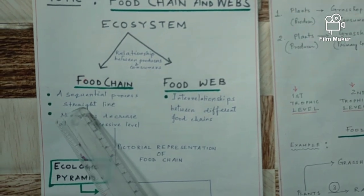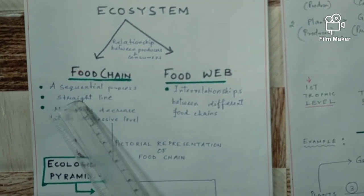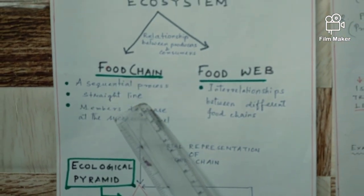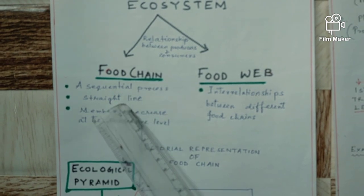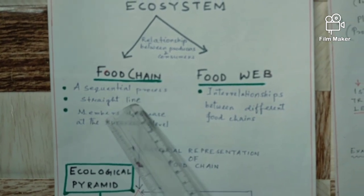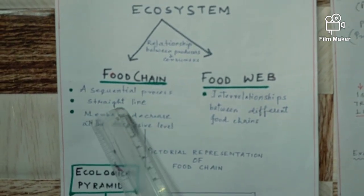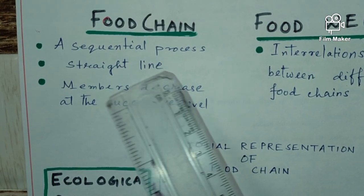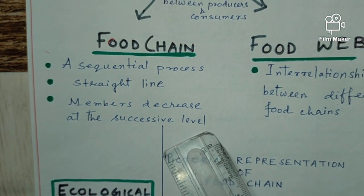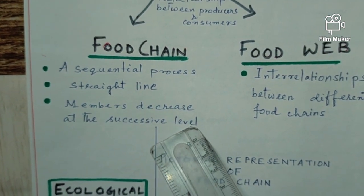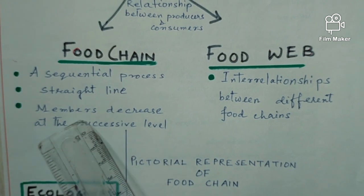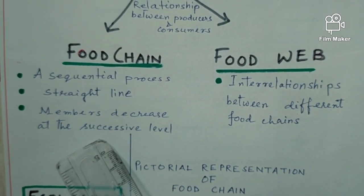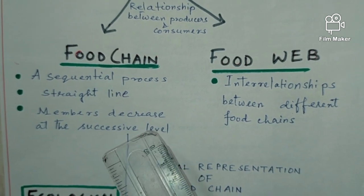The second characteristic states that it is a straight line. Food chain always forms a straight line because whenever we represent a food chain the organisms are shown with an arrow in between, so it forms a straight line. Next, members decrease at each successive level. If you see the food chain, the producer level number is always the highest and the number of organisms at successive levels goes on decreasing.